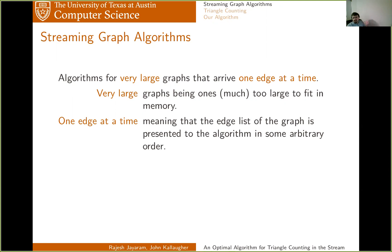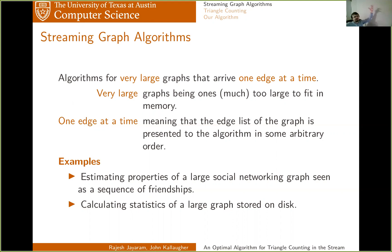Examples of applications of this kind of idea are things like you see a very large social network as a series of events of the form Alice is friends with Bob, Bob is friends with Charlie, and so on. Or alternatively, consider the situation when you have a really large graph stored on some very slow storage device. You can't efficiently random access it, but you can stream through it on your much more limited main memory and calculate some kind of statistics of it.